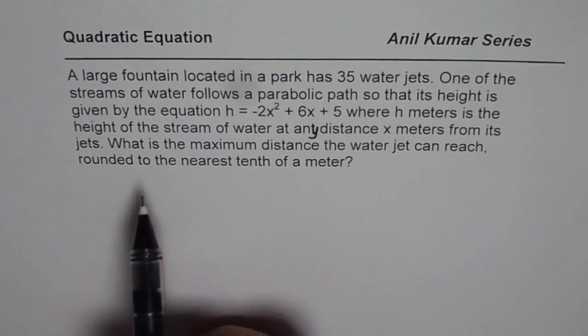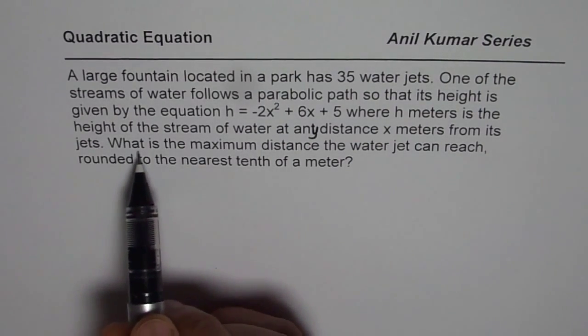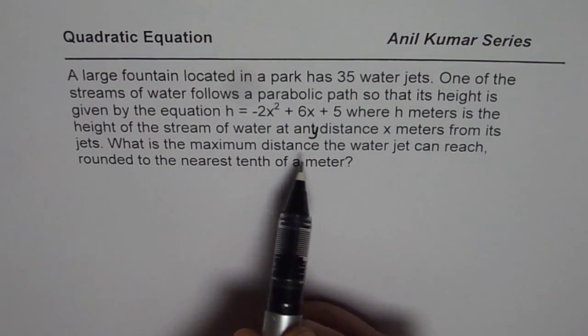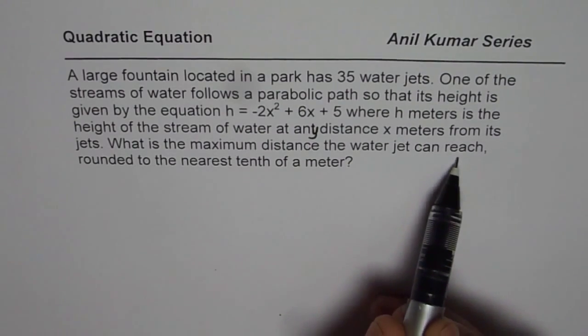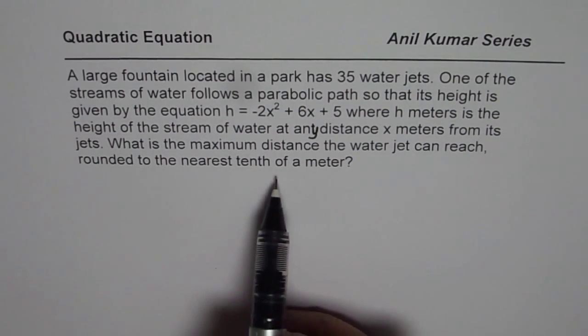So x is the distance, right? And it says what is the maximum distance the water jet can reach, rounded to nearest tenth of a meter.